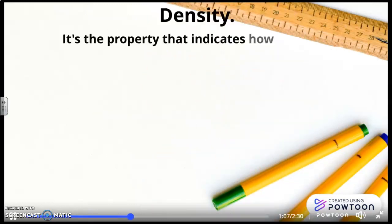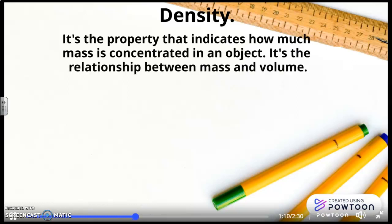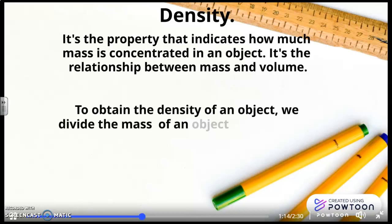Density. It's the property that indicates how much mass is concentrated in an object. It's the relationship between mass and volume. To obtain the density of an object, we divide the mass of an object by its volume.